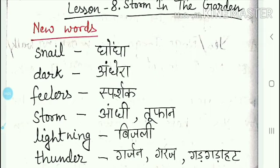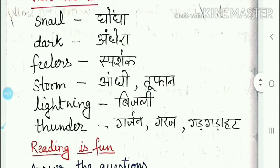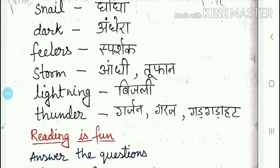Second is dark — dark ka matlab hai andhera. Third is feelers — feelers ka matlab hai asparshak. Fourth is storm — storm ka matlab hai aandhi tufan. Fifth is lightning — lightning ka matlab hai bijli. And the last one is thunder.